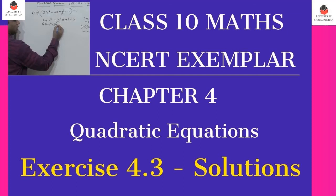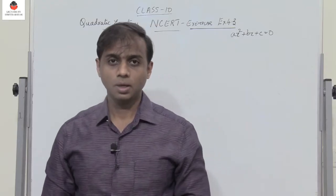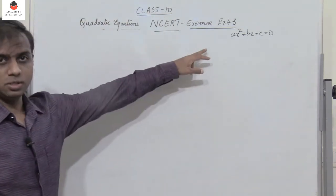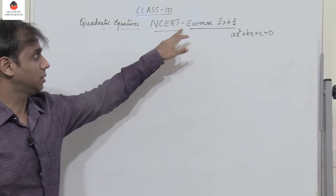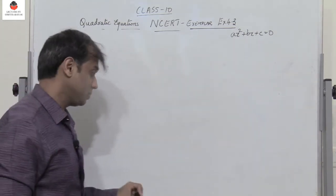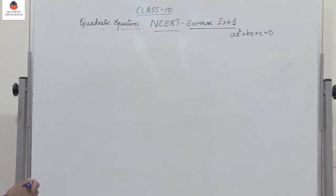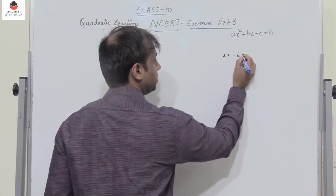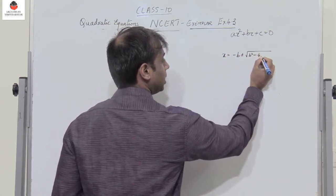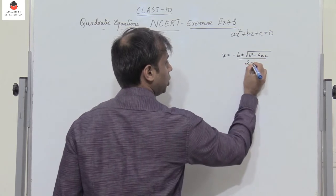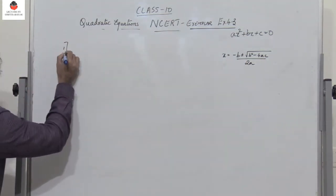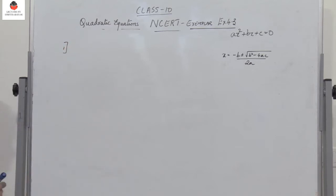Hello students and friends, we were solving problems from the NCERT Exemplar quadratic equations. Now let's move on to Exercise 4.3 on quadratic equations. The first problem states: find the roots of the quadratic equation by using the formula. The formula is x equals minus b plus or minus root of b squared minus 4ac divided by 2a. The first question has seven quadratic equations given.